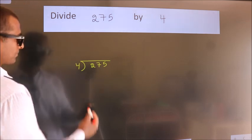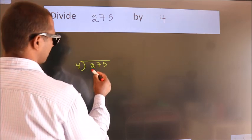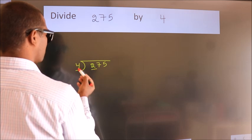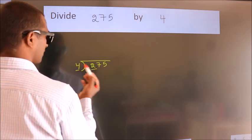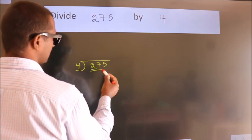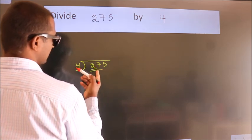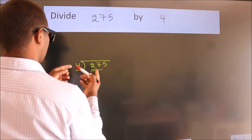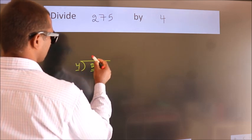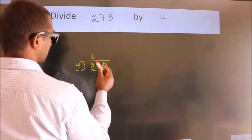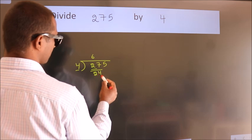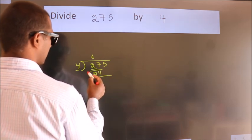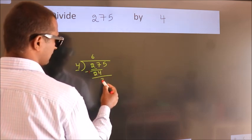Next, here we have 2, here 4. 2 is smaller than 4, so we should take 2 numbers: 27. A number close to 27 in the 4 times table is 4×6 = 24. Now we subtract and we get 3.